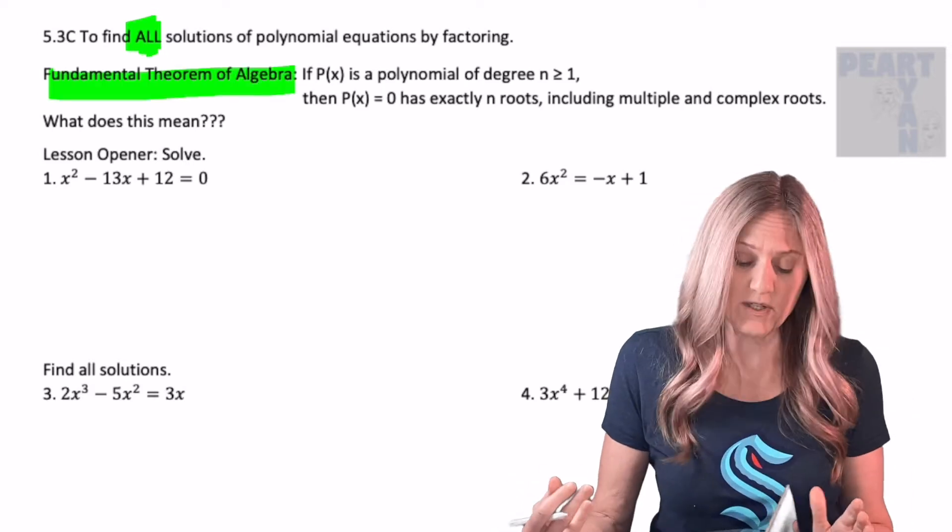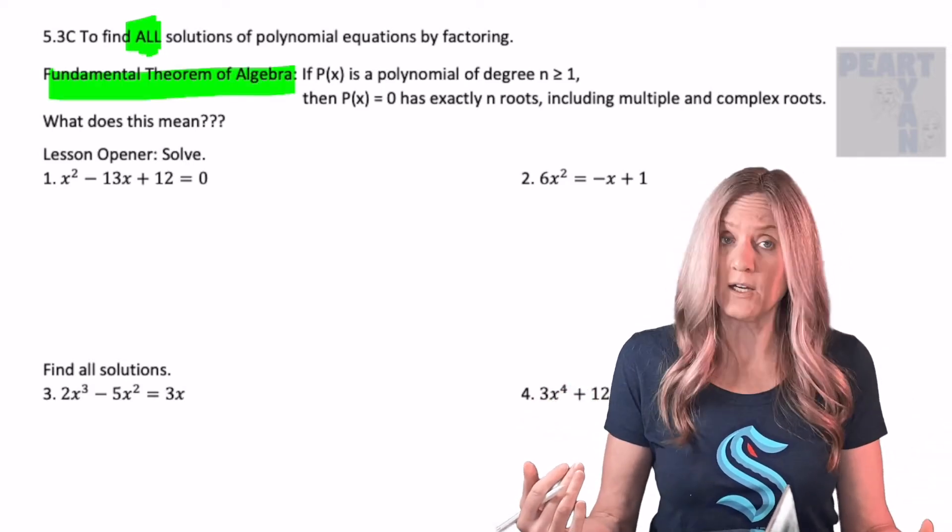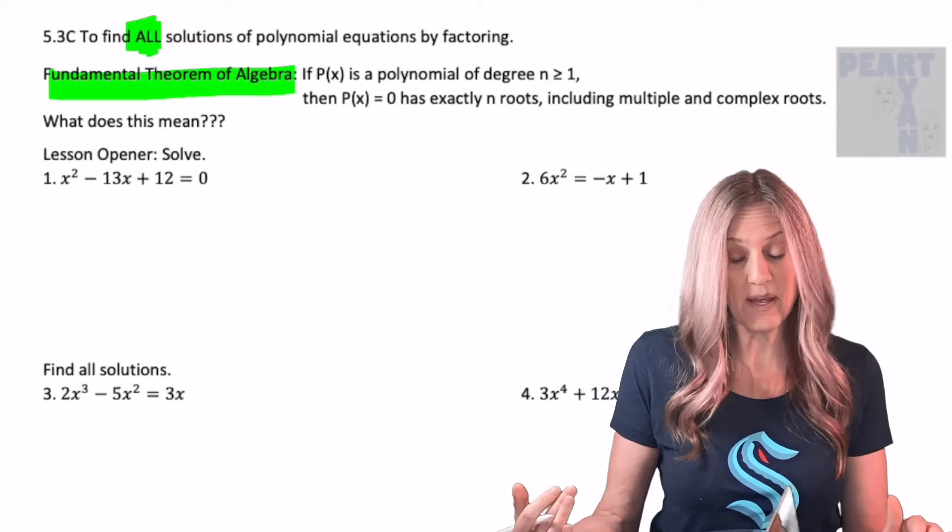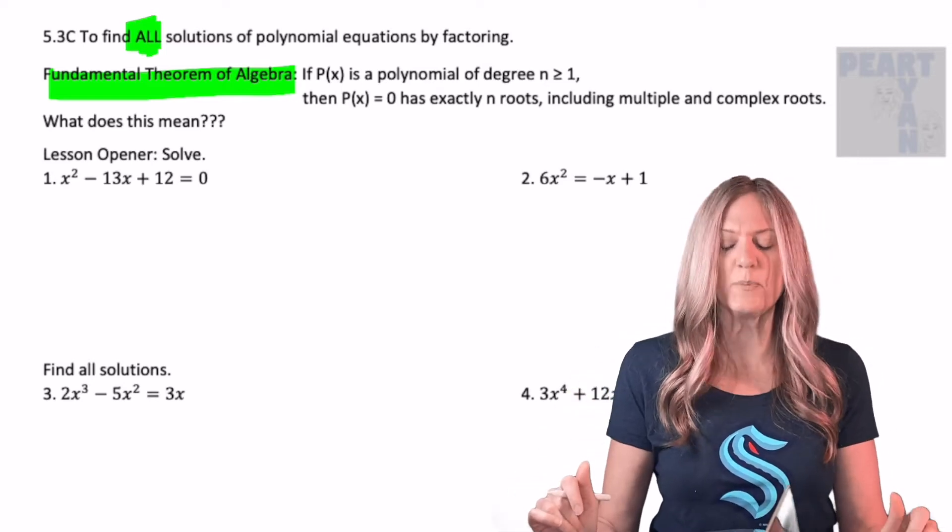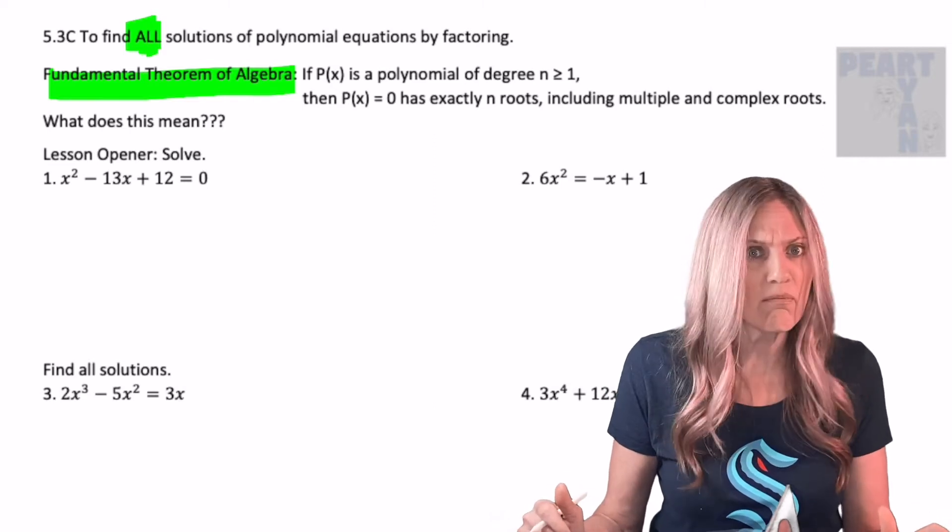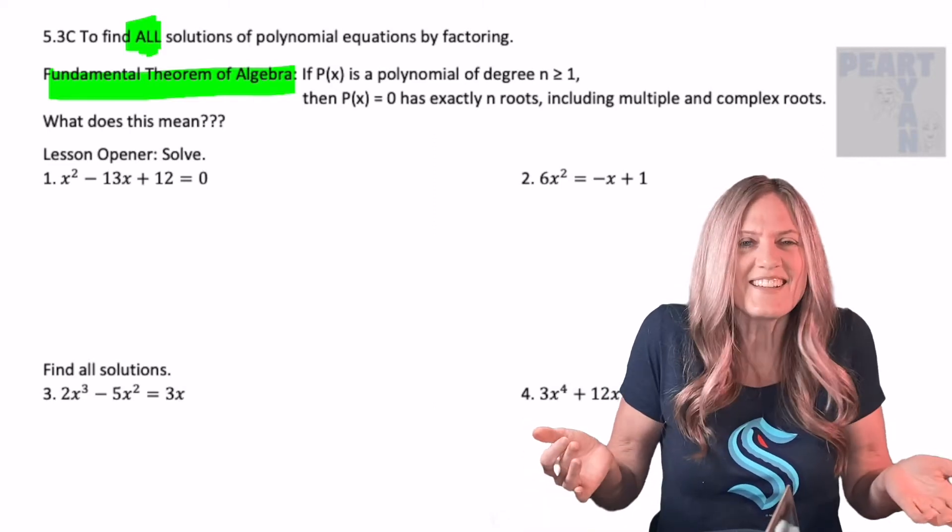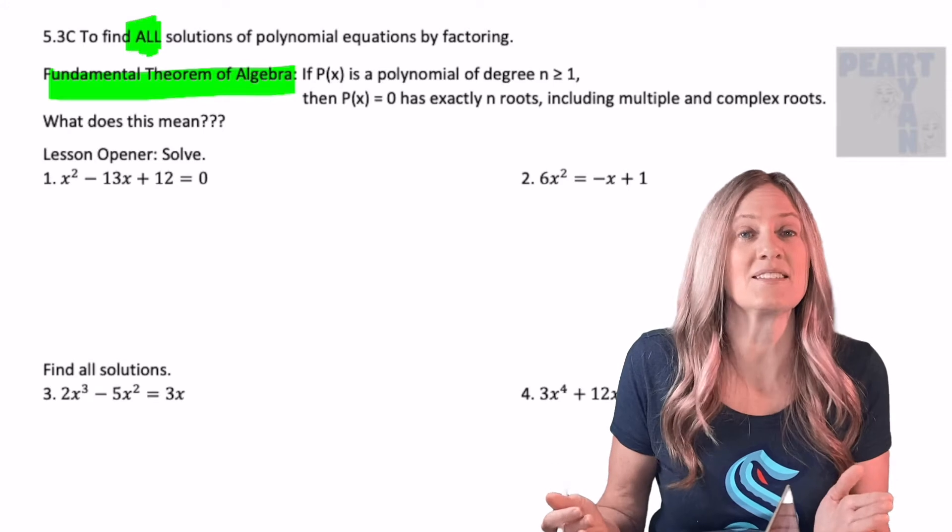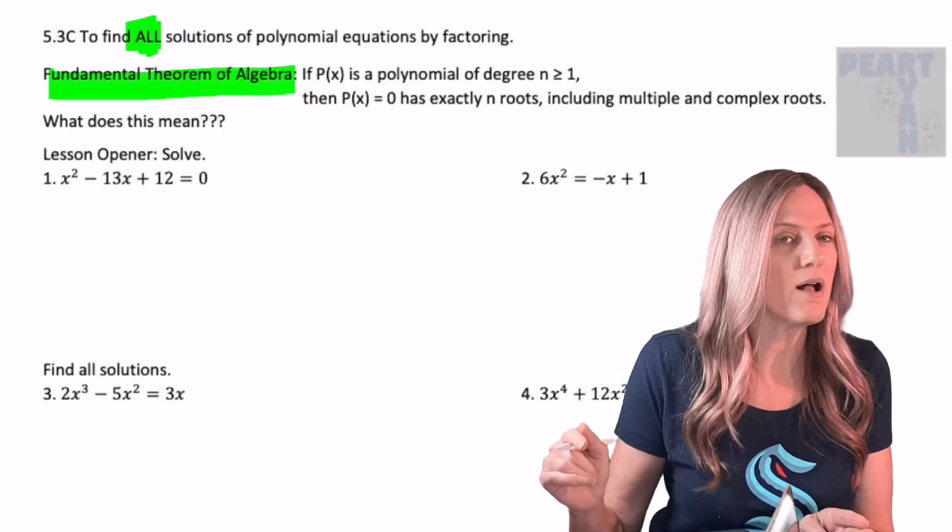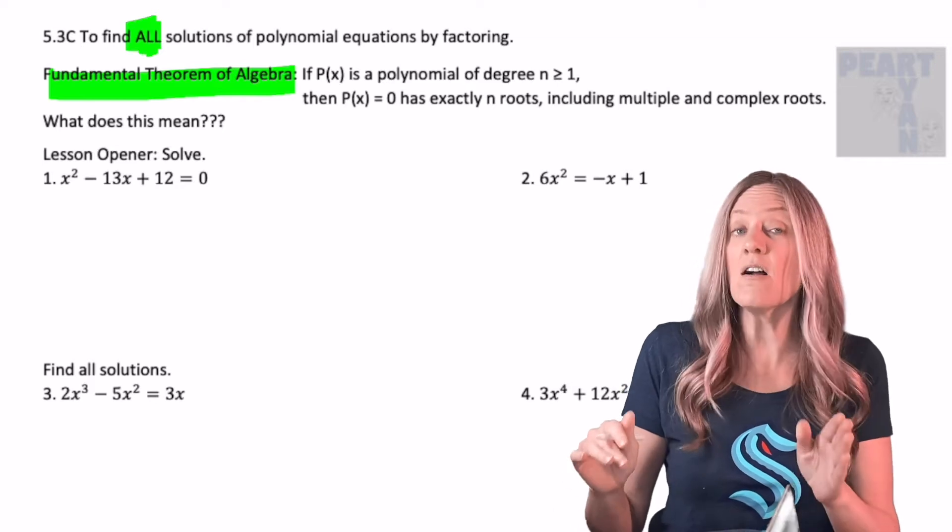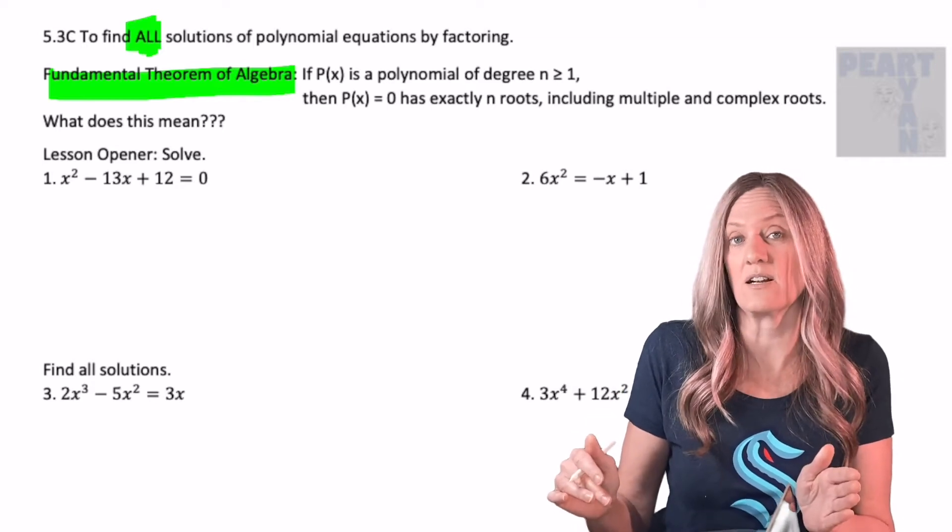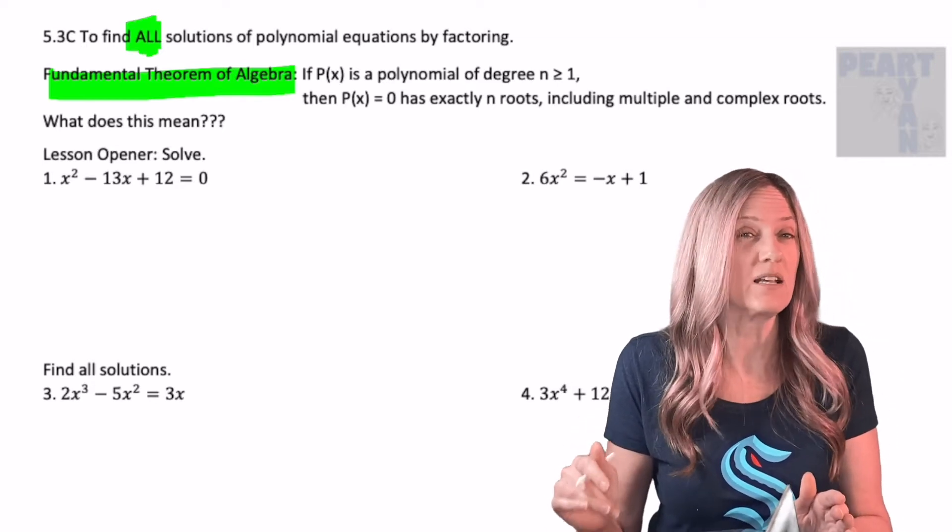Now the formal language is, if P(x) is a polynomial of degree n greater than or equal to 1, then P(x) = 0 has exactly n roots, including multiple and complex roots. All right, what does this mean? Well, it simply means that once we know the degree of the polynomial, that's how many solutions I should have. They aren't all real solutions necessarily, but there should be that many solutions.